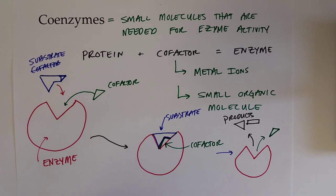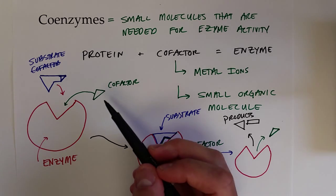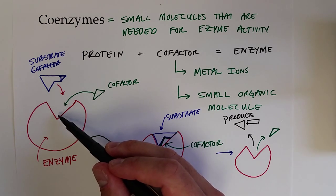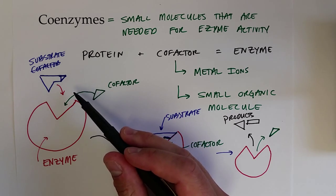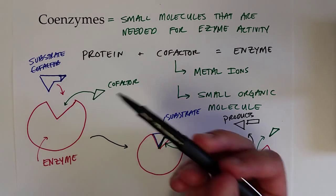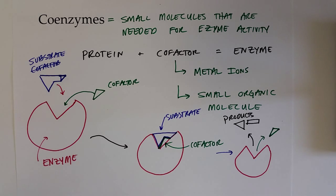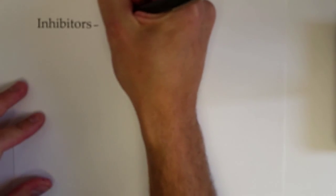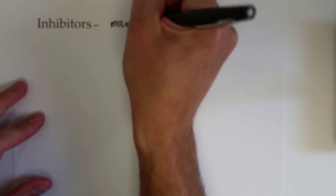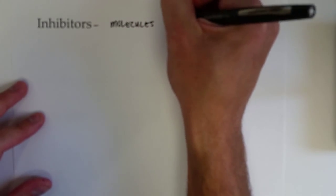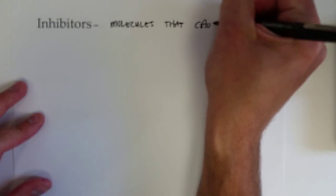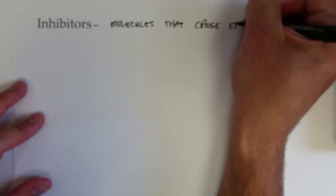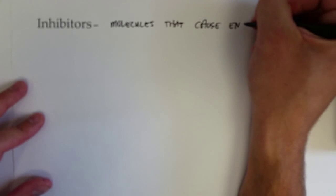Additionally, there are some processes where a molecule can actually bind to the active site that isn't a cofactor or a substrate, and that actually causes the enzyme to stop working or inhibits its function. These are called inhibitors — molecules that cause enzymes to lose their function or their catalytic activity.